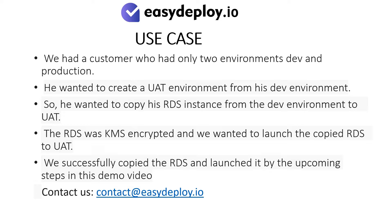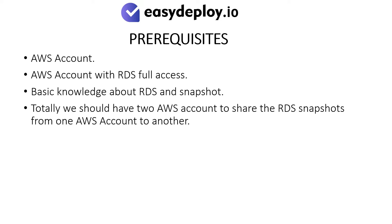Should you require help in performing this step, please feel free to contact us at the email mentioned: contact@easydeploy.io. Prerequisites: AWS account with RDS full access, basic knowledge about RDS and snapshots. We should have two AWS accounts to share the RDS snapshots from one AWS account to another.